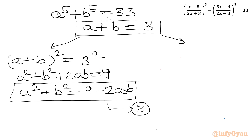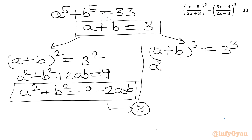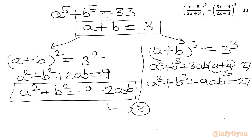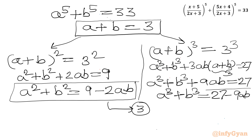Now let's consider cubing both sides. So (a+b)³ = 3³ = 27. Expanding: a³ + b³ + 3ab(a+b) = 27. Since a + b = 3, we get a³ + b³ + 9ab = 27. Therefore a³ + b³ = 27 - 9ab. I will call this equation number 4.